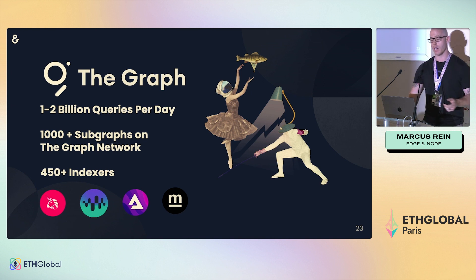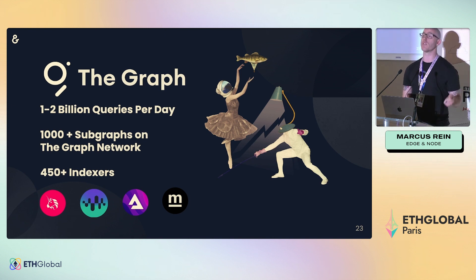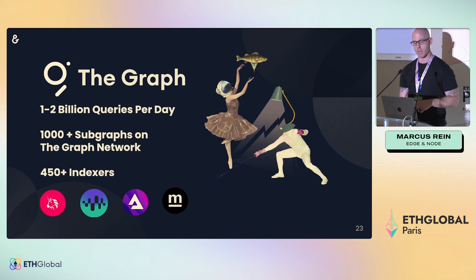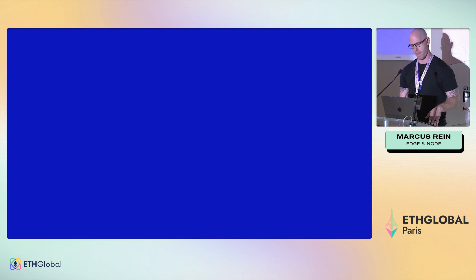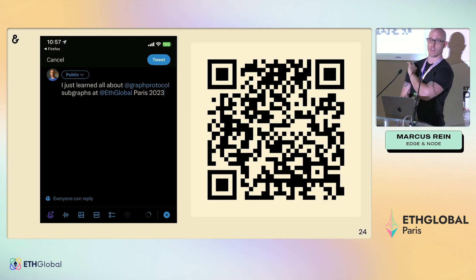1.1 to 2 billion queries per day are running through The Graph. There are over 1,000 subgraphs published on The Graph network in the marketplace, and over 450 indexers. Now let's go ahead and get into the code.